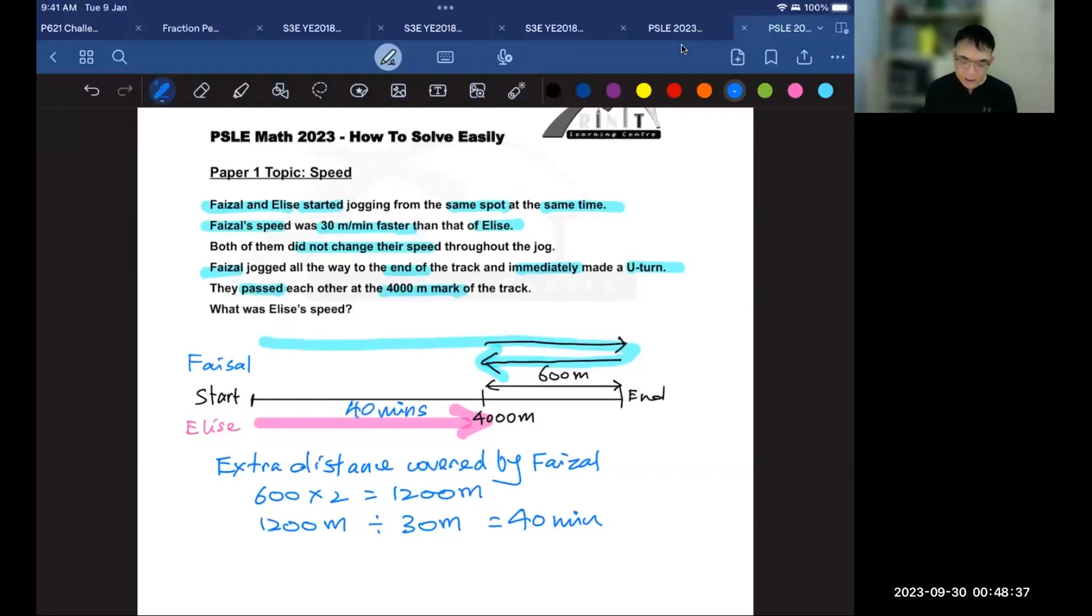To find Elise's speed, we need to use the formula for speed. So the formula for speed is the distance traveled divided by the time it took to travel that distance. So since we are finding Elise's speed, then the distance traveled is 4,000 meters, and she took 40 minutes. So we are going to use these two numbers.